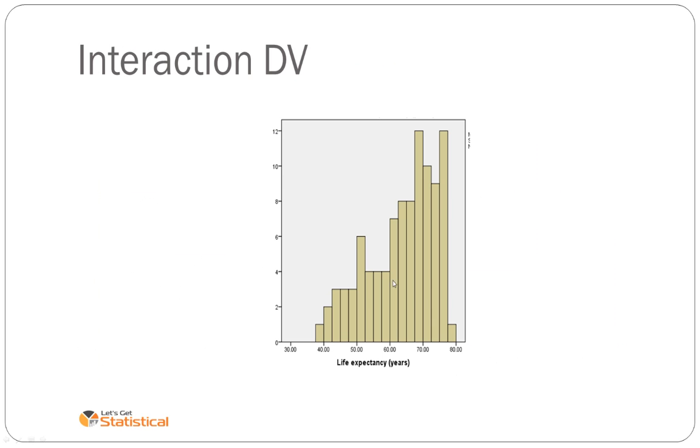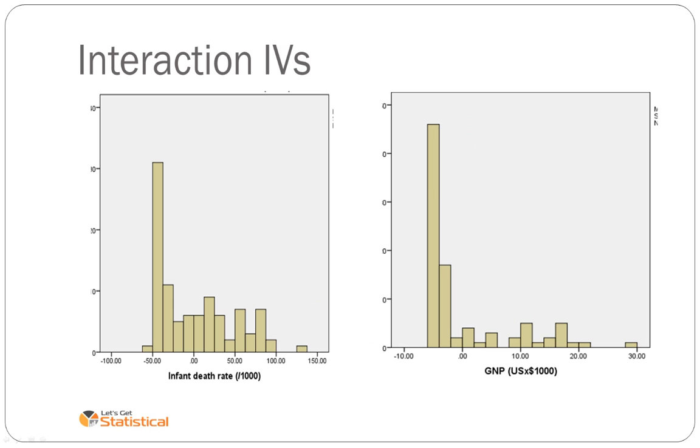Moving on beyond that, so looking at the interaction of DV, of life expectancy, it's severely left skewed, doesn't appear to actually have a central tendency, but this is not unexpected. We might want to change this data, but we'll leave it as is because this is what we expect for this variable. These are our two IVs that we're going to include in our interaction, infant death rate and gross national product. They're right skewed, this is not unusual.